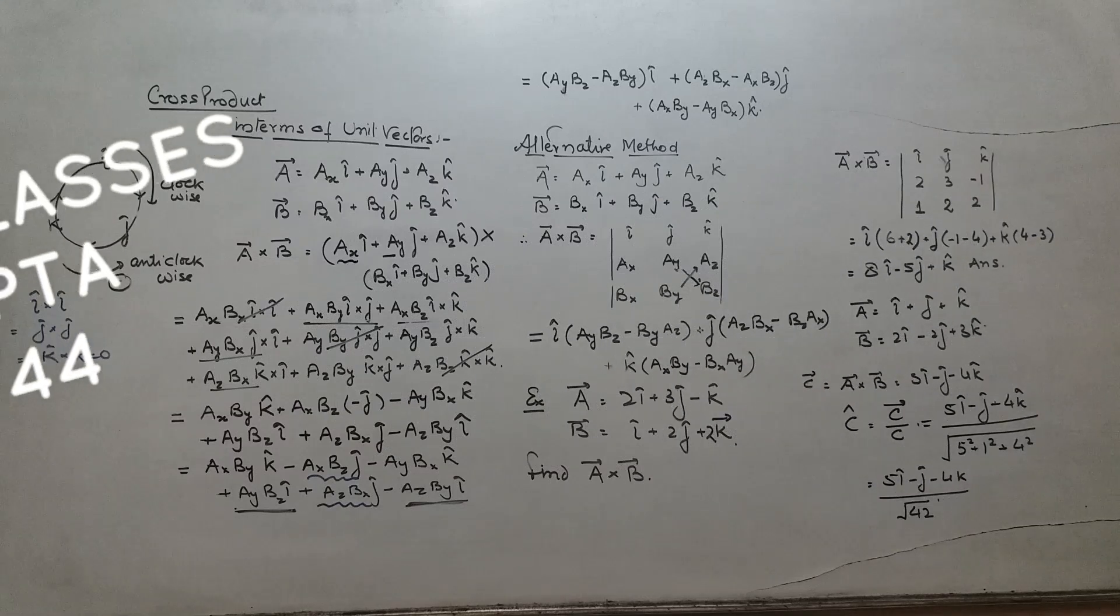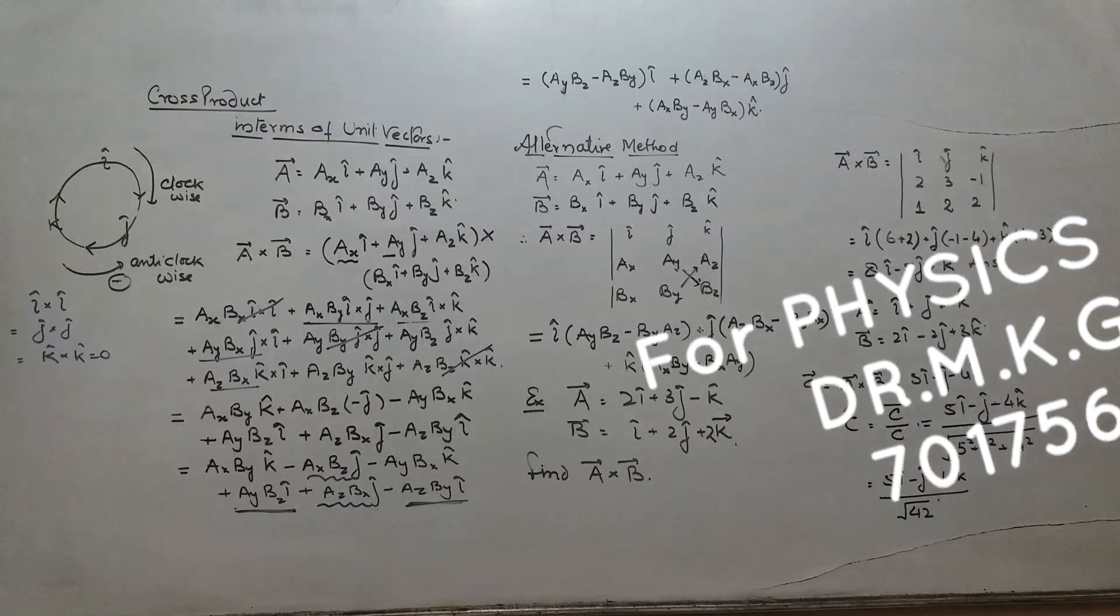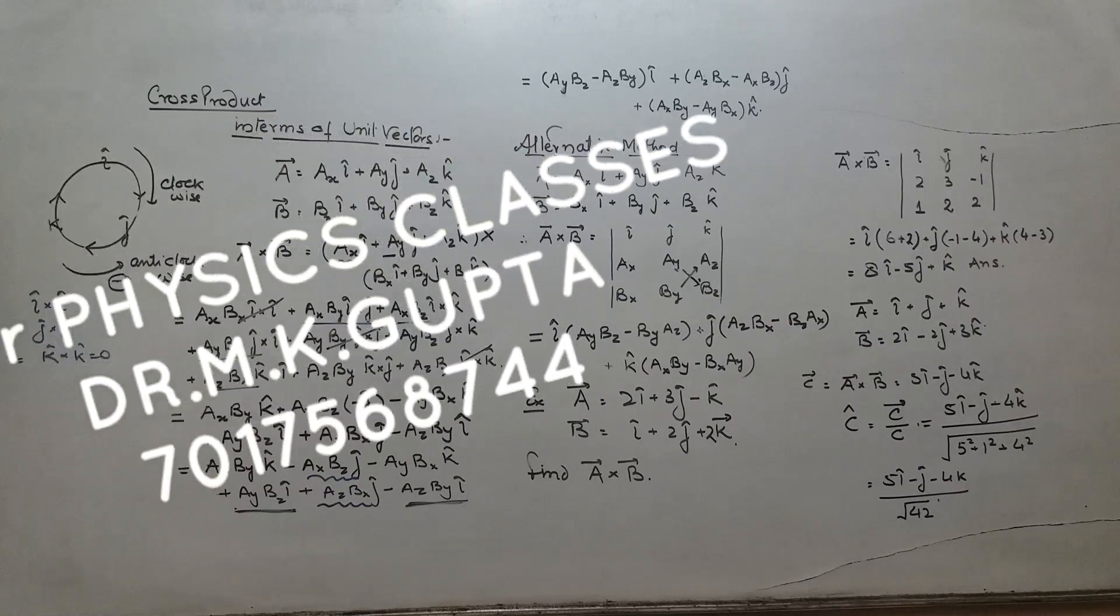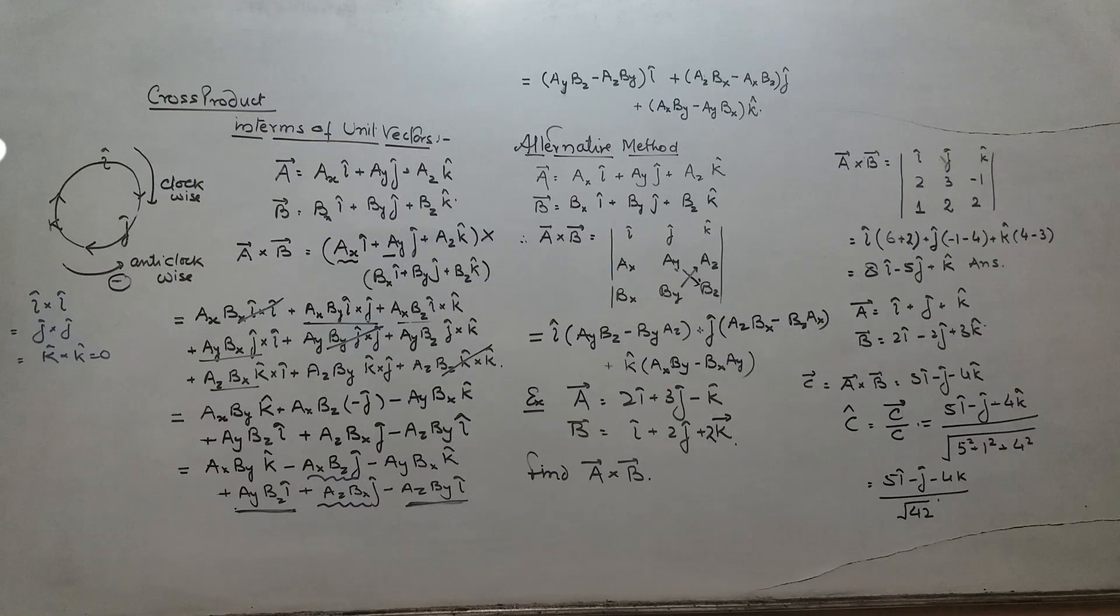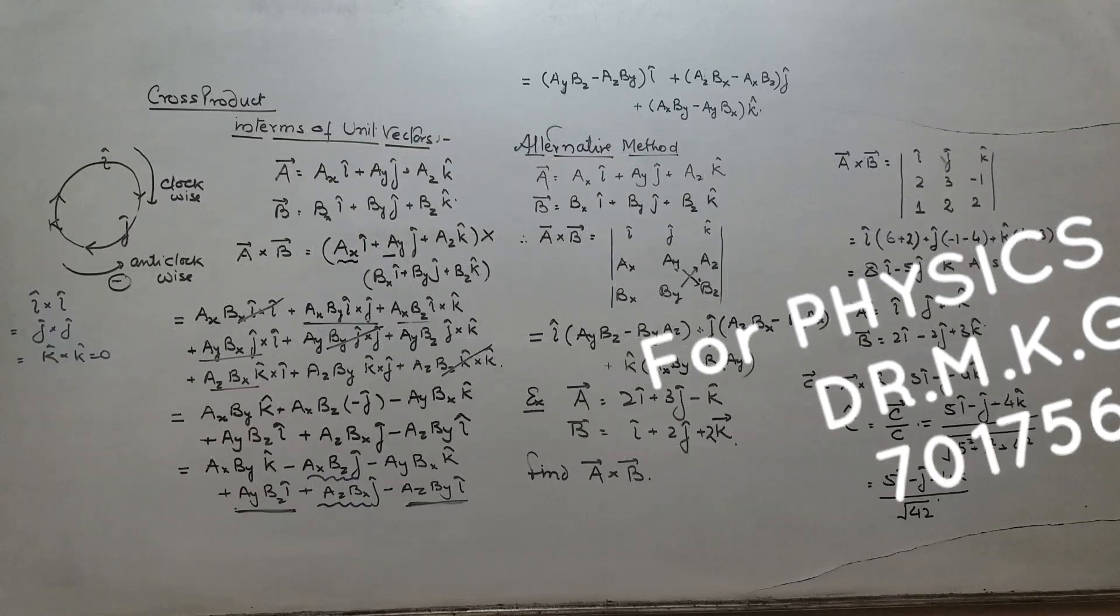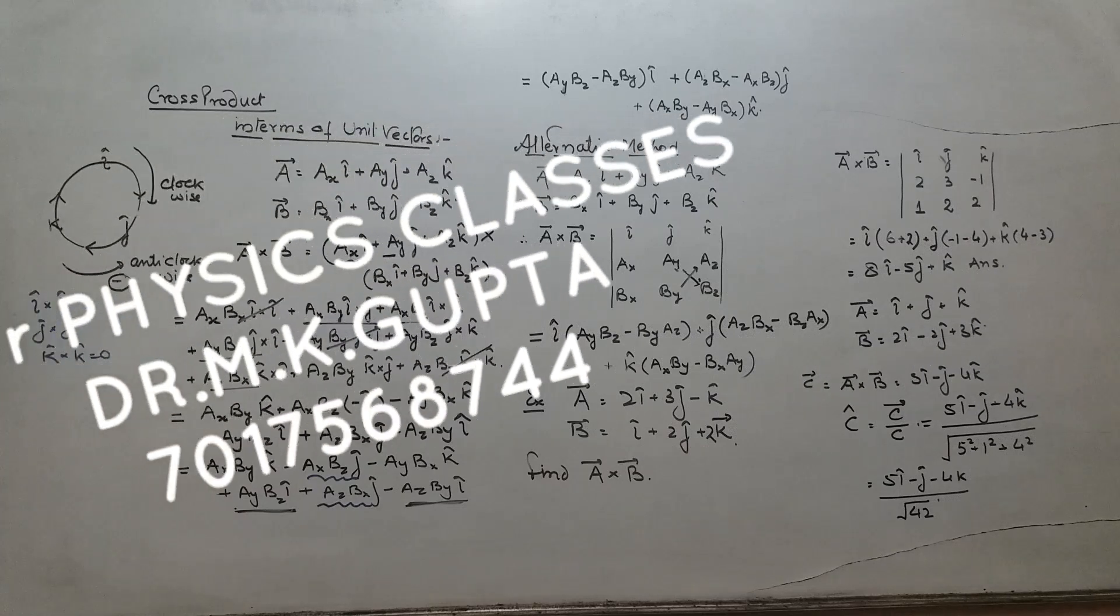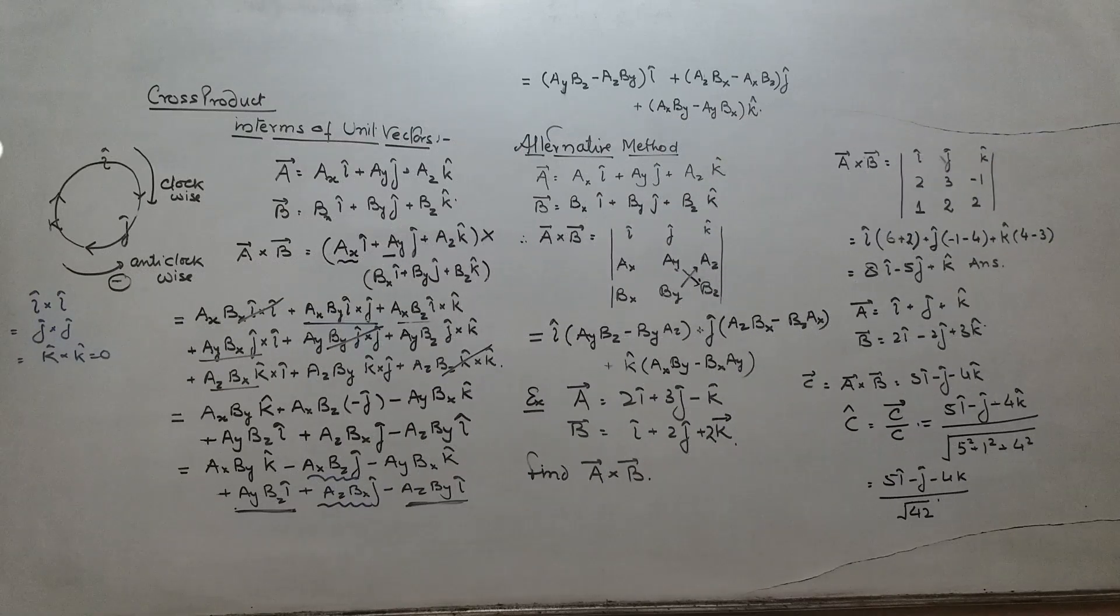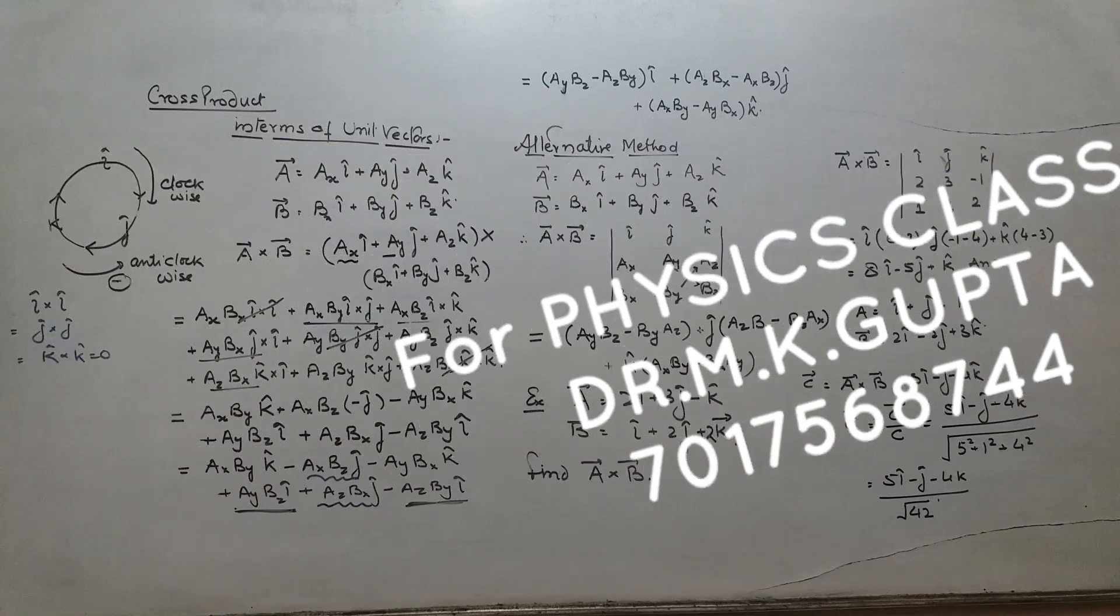Now to calculate a vector cross b vector, when I am writing the x component means i cap, then in this determinant, hide the first column. Then as shown before you, you can write a_y b_z minus b_y a_z, when you will write j component, hide second column and you will write a_z b_x minus b_z a_x and similarly for k cap. In this pattern. Thank you.